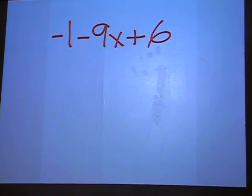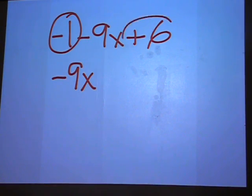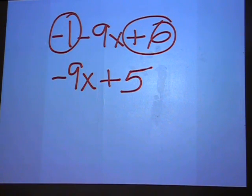Also, if you have negative 1 minus 9x plus 6, it's the minus 9x that stays the same. But you have negative 1 plus 6. That's a plus 5. So you end up with negative 9x plus 5.